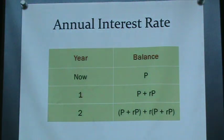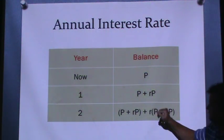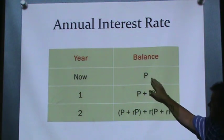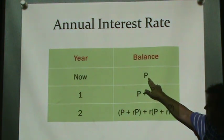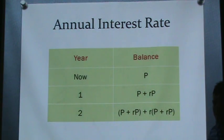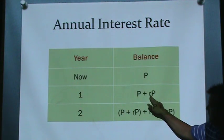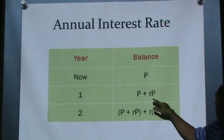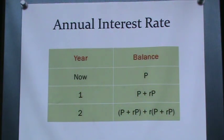One year from today, you would owe whatever the principal is plus a rate times the principal. For example, if you borrowed $100 today, you might owe $100 plus 5% of $100, which is $5. So you might owe $105 a year from today.